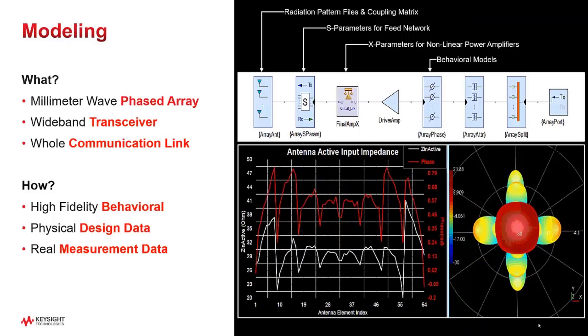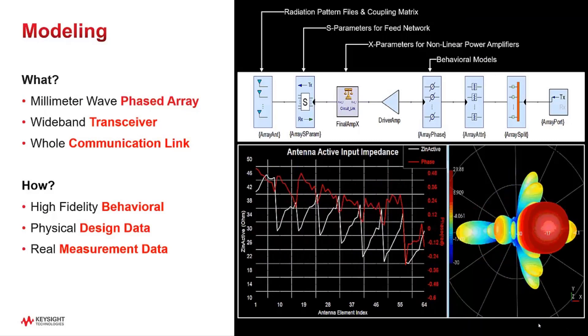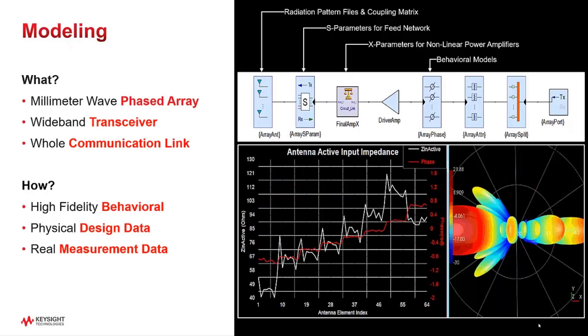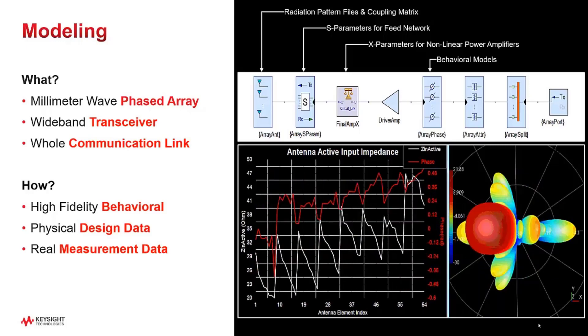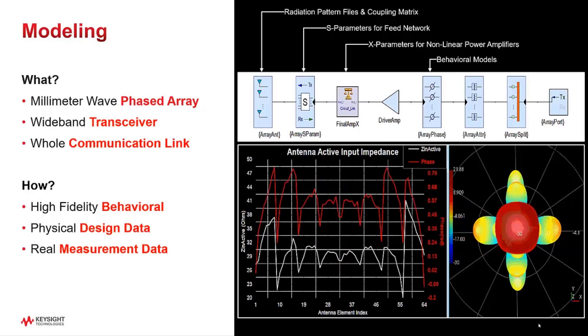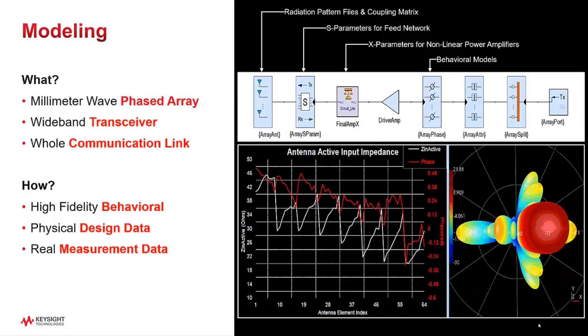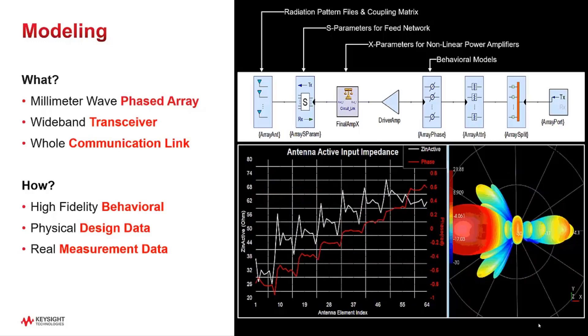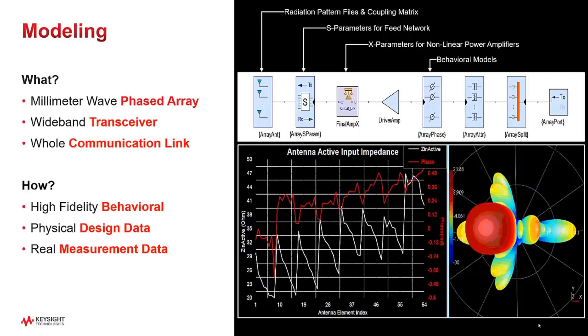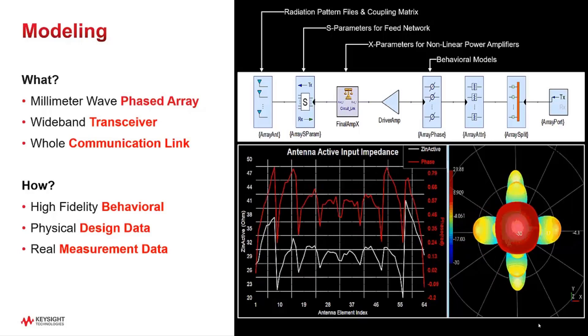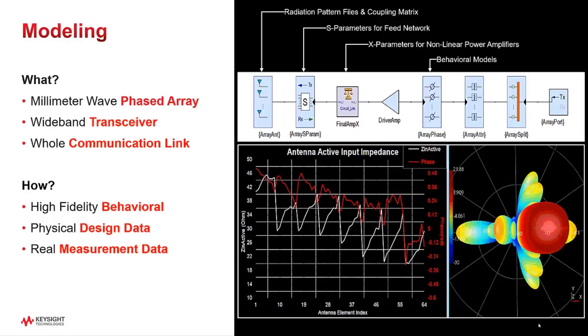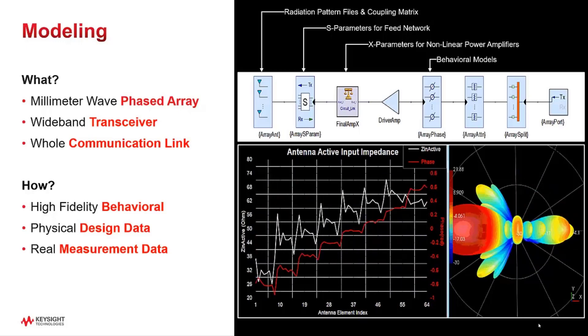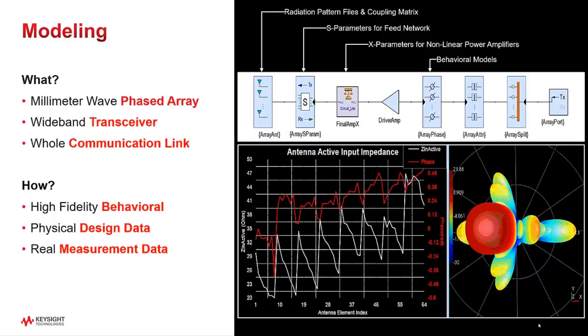Here we have a reference model of a millimeter wave phased array system. Active input impedances of the antenna array are dynamically changing as beam direction is changing. This real-world electric circuit behavior is very challenging for modeling and also measuring. As seen in the schematic, we use extracted data from real physical designs such as the antenna coupling matrix, feed network S parameters, and power amplifier X parameters. These are combined with high fidelity behavioral models to create an entire phased array RF chain.